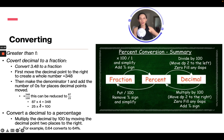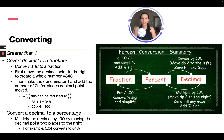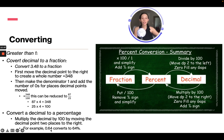You can see that because 87 times 4 is 348 and 25 times 4 is 100. So to convert a decimal to a percentage, multiply the decimal by 100 by moving the decimal point two places to the right. For example, 0.64 converts to 64%. All you have to do is move the decimal place over two and add a percentage sign.